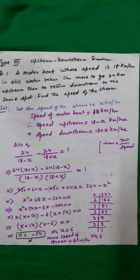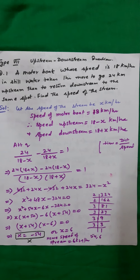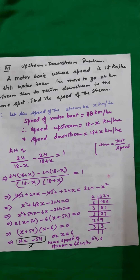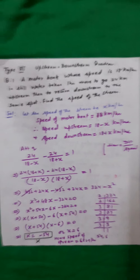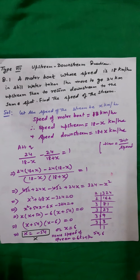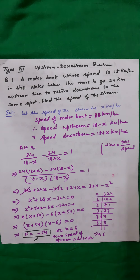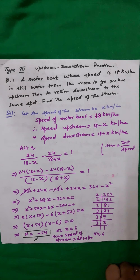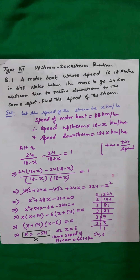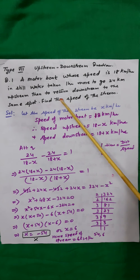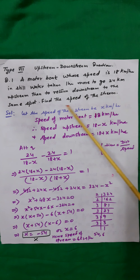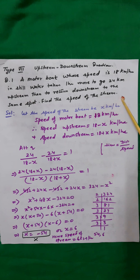Question number 1. This question states that a motorboat whose speed is 18 km per hour in still water takes 1 hour more to go 24 km upstream than to return downstream to the same spot. Find the speed of the stream.